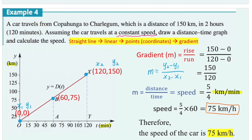This applies to any point on this graph. For example, if you take point O and point B and do rise over run to find the gradient, the gradient will still be the same.